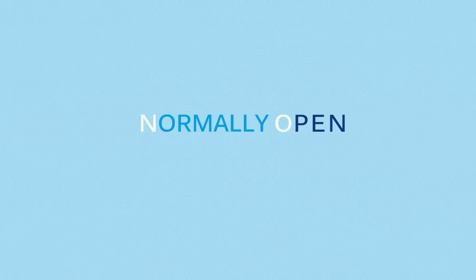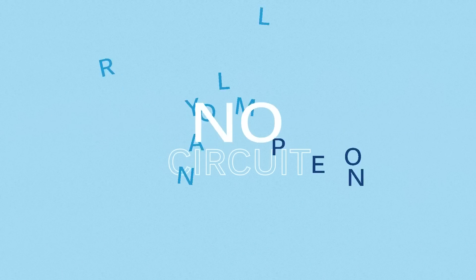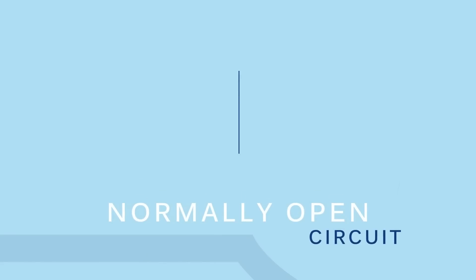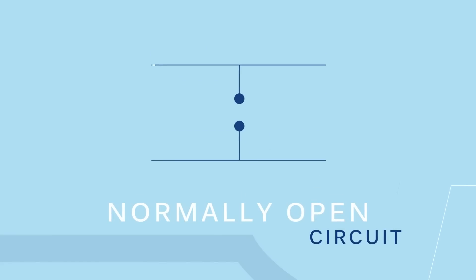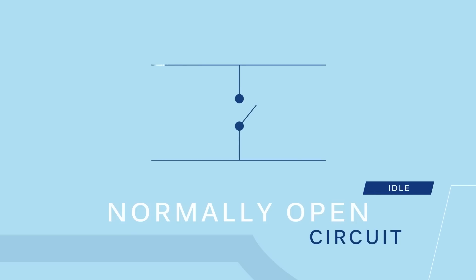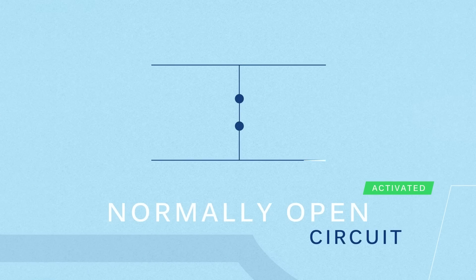Normally open circuit. Normally open function means that there is no current flowing through the switch when not activated. Once the switch is activated, the contact closes and allows the current to flow through.